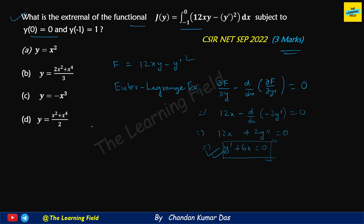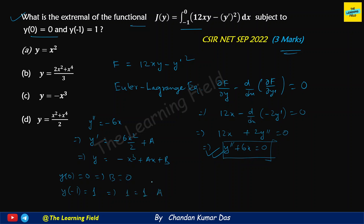From y-double-dash equals minus 6x, integrating gives y-dash equals minus 6x-squared over 2 plus a, and integrating again gives y equals minus x-cubed plus ax plus b. Applying the boundary condition y(0) = 0 gives b = 0, and y(minus 1) = 1 gives 1 = 1 + 1 minus a, so a = 0. Therefore both constants are zero and y equals minus x-cubed, which is the extremal — option C.